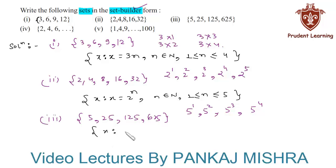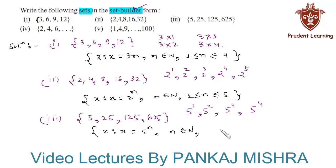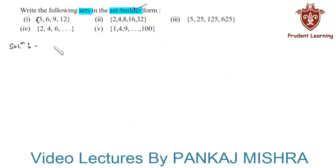So the given set can be written in set builder form as: X such that X = 5ⁿ, where n belongs to natural numbers and n is greater than or equal to 1 and less than or equal to 4.